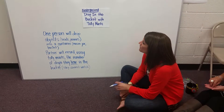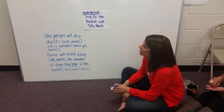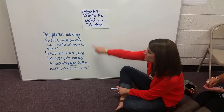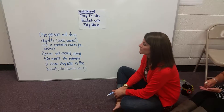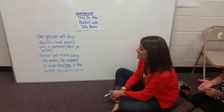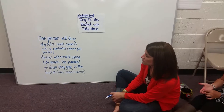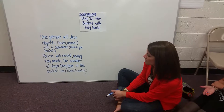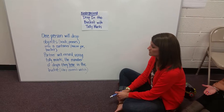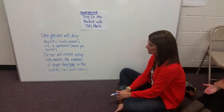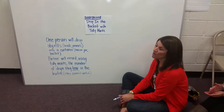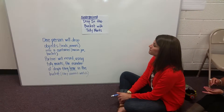Our activity is called Drop in the Bucket with Tally Marks. For this activity, one person will drop objects such as beads or pennies into a container like a mason jar or a bucket. Their partner will record using tally marks the number of drops they hear in the bucket. They cannot watch their partner.